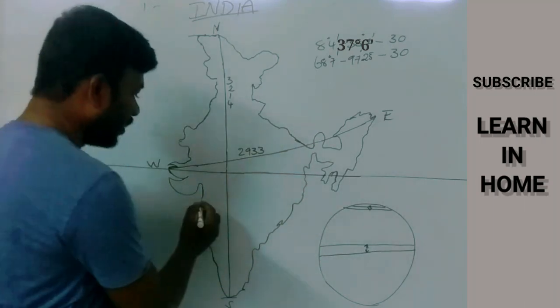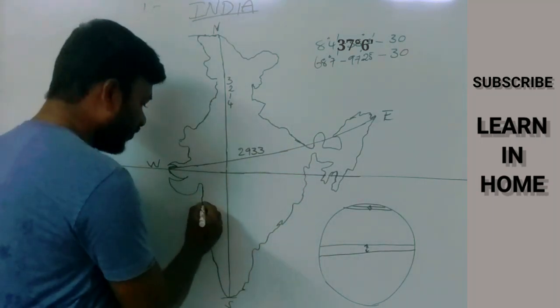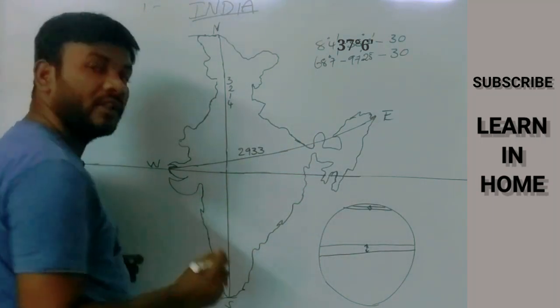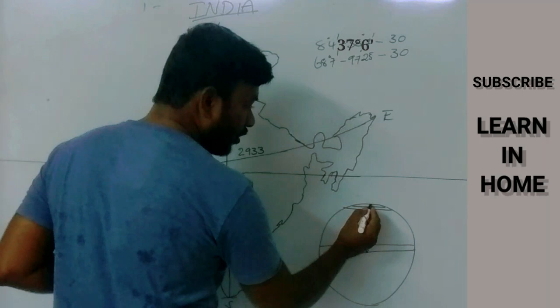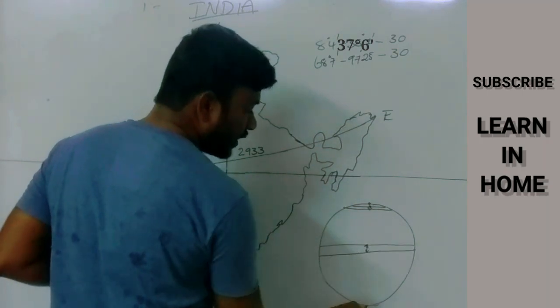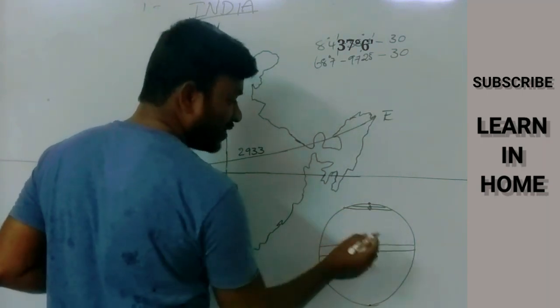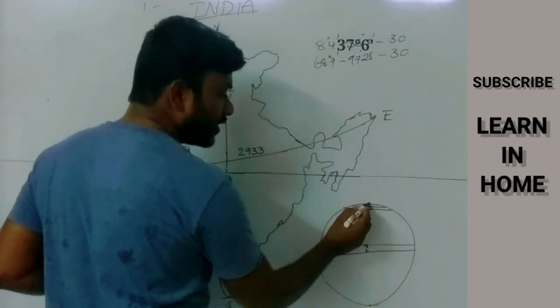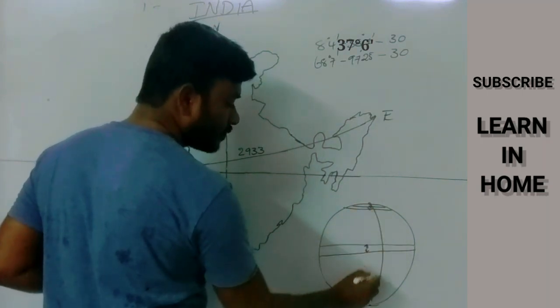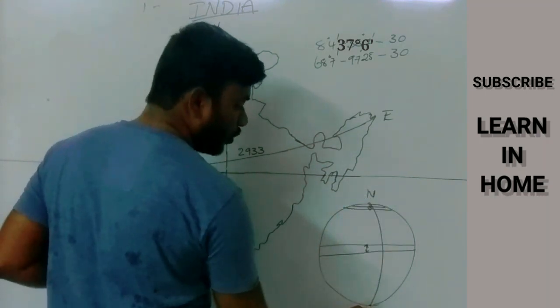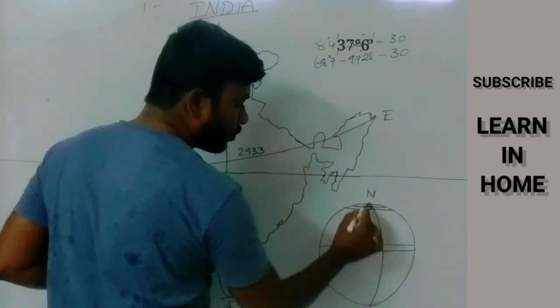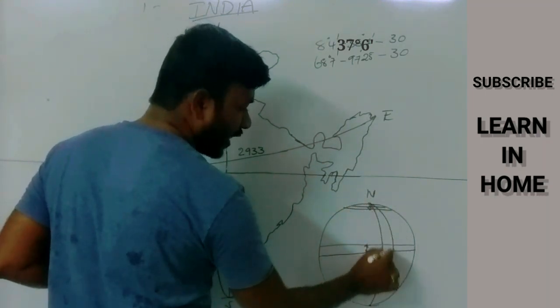But if you observe the longitudes, they are not circles — they are semi-circles. They are drawn from one pole to another pole, connecting both poles.